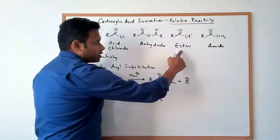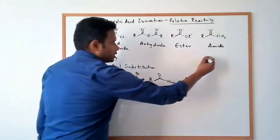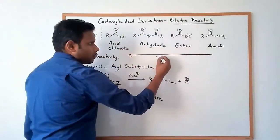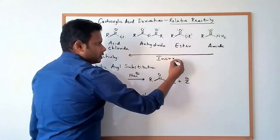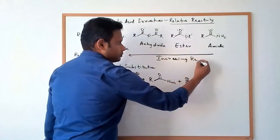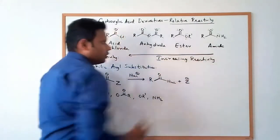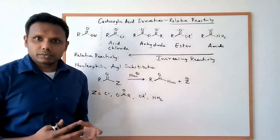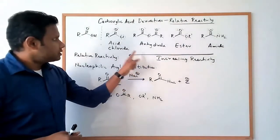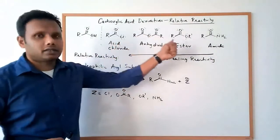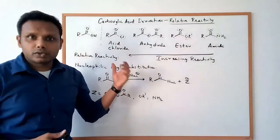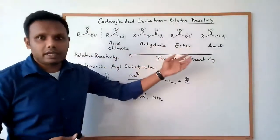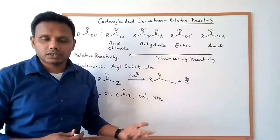And then anhydrides, esters, and amides. So essentially, the reactivity increases in this order — this is increasing reactivity for a nucleophilic acyl substitution. To put it into simple language, what that means is if you have an acid chloride and an amide, the acid chloride is going to react much faster, probably violently in some cases, compared to the amide, which may not react or might react really slow.